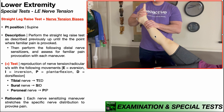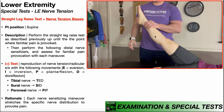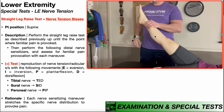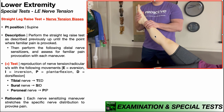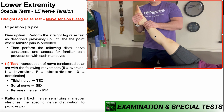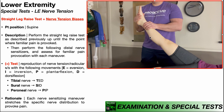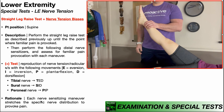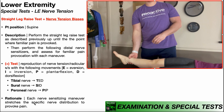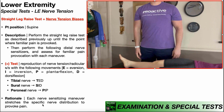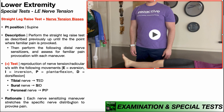Last, I'm going to bias the common peroneal nerve — P for peroneal, Pip. This is going to be inversion and plantar flexion: plantar flexion first, and then inversion. The rationale here is that each nerve sensitizing maneuver stretches the specific nerve distribution to provoke pain.